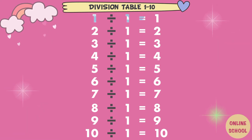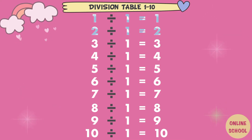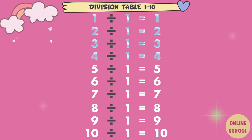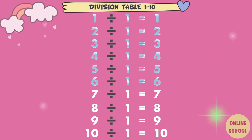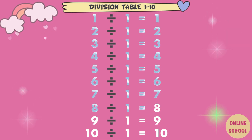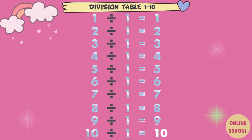1 divided by 1 equals 1. 2 divided by 1 equals 2. 3 divided by 1 equals 3. 4 divided by 1 equals 4. 5 divided by 1 equals 5. 6 divided by 1 equals 6. 7 divided by 1 equals 7. 8 divided by 1 equals 8. 9 divided by 1 equals 9. 10 divided by 1 equals 10.